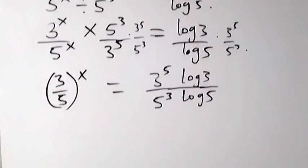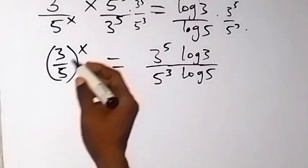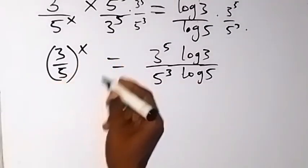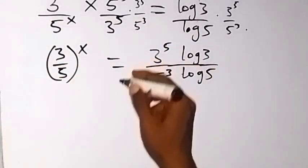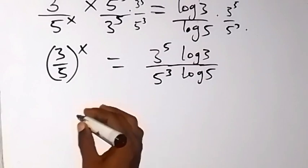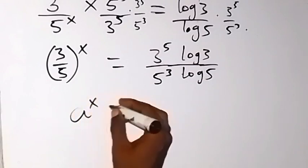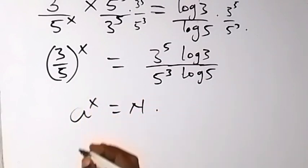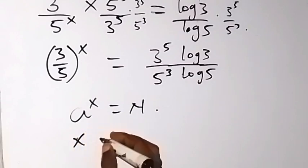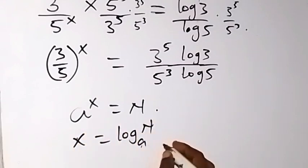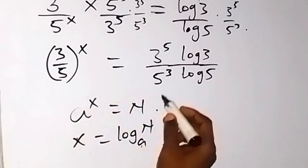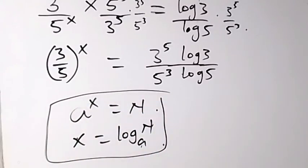So from there, since we have an expression in exponent form, I can convert it back to logarithmic form. Don't forget that when we have a raised to the power x equals n, this is the same as x equals log n base a. That is changing from index form to logarithmic form. So let's apply that to what we have now.